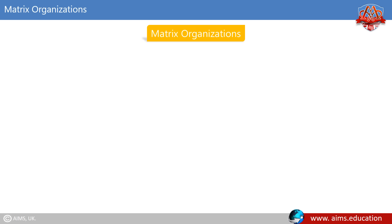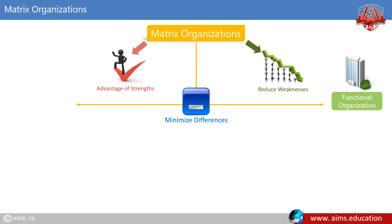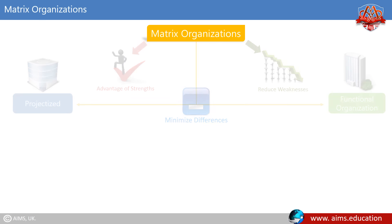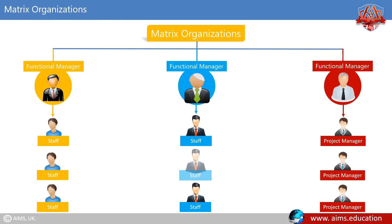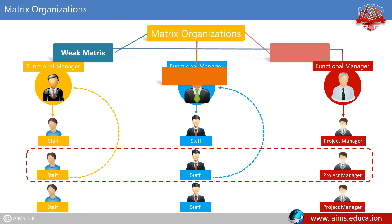Matrix organizations came about to minimize the differences between, take advantage of the strengths of, and reduce the weaknesses of functional and projectized organizations. The best of both organizational structures can be realized by combining them. Employees in a matrix organization report to one functional manager and to at least one project manager. A matrix organization structure is further divided into three types: weak matrix, balanced matrix, and strong matrix.